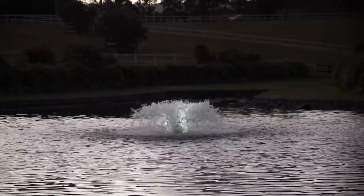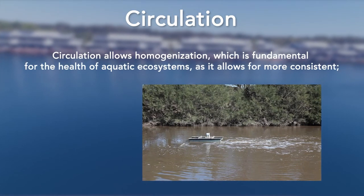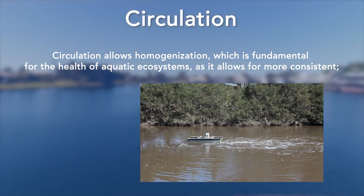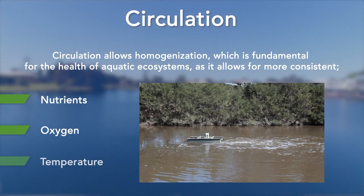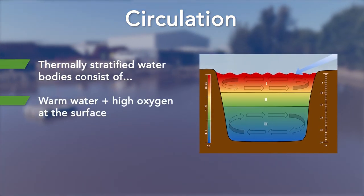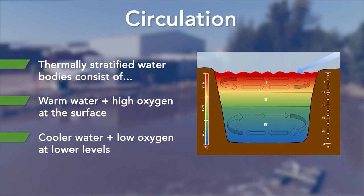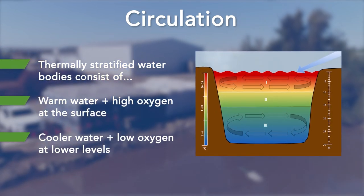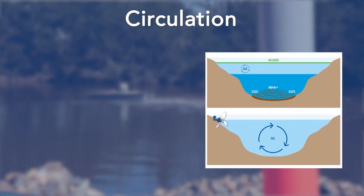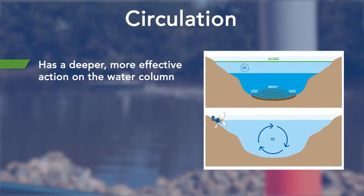As we move into circulation, it is vital to understand the importance of circulation in water bodies. Circulation allows homogenization in water columns, which is fundamental for the health of aquatic ecosystems as it allows for more consistent concentration of nutrients, oxygen, and temperature. Dams, lakes, and other forms of thermally stratified water bodies consist of warmer water with higher oxygen concentration at the surface and cooler water with very low oxygen concentration at lower levels. Sometimes the natural effect of wind contributes to partial mixing of the upper water layer, but often this is not enough for complete homogenization. Circulators are then required, as they have a deeper, more effective, and continuous action in the water column.